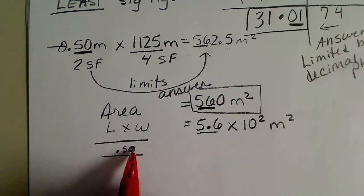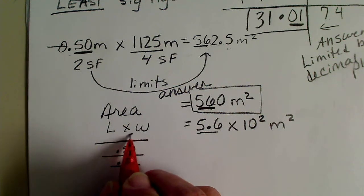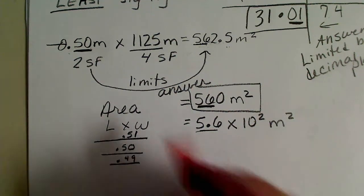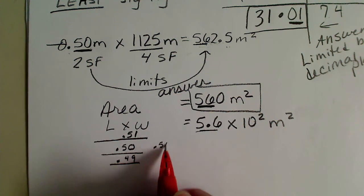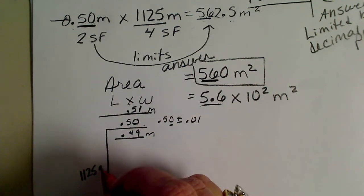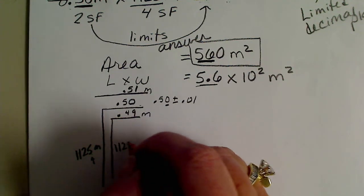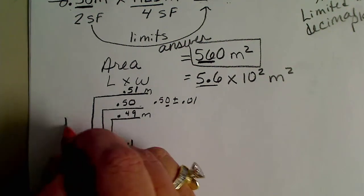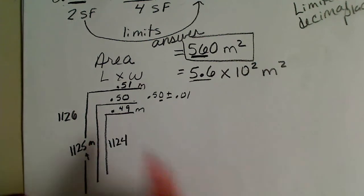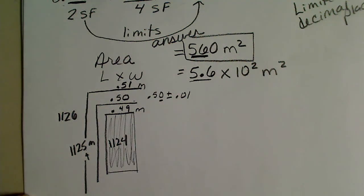Since 0.50 is a measured value, it is plus or minus 0.01, so the measurement could be as large as 0.51 meters or as small as 0.49 meters. Similarly, the measurement of 1125 meters has uncertainty in the last digit, so it could be as small as 1124 meters or as large as 1126 meters. There is always a little bit of uncertainty or error in a measurement.